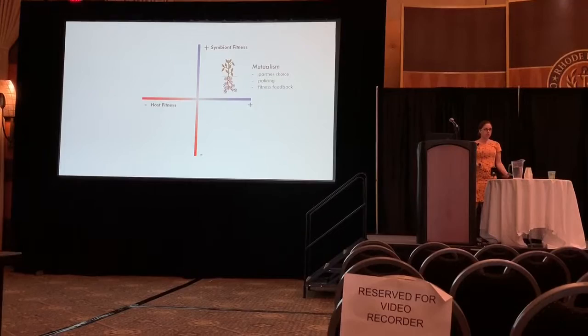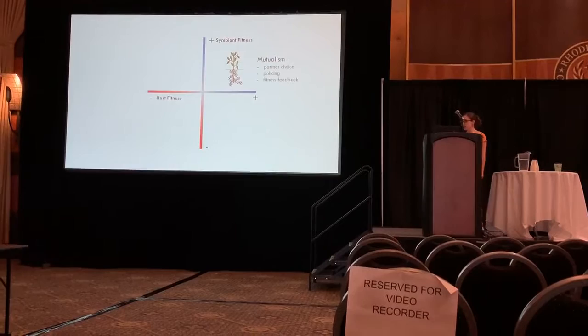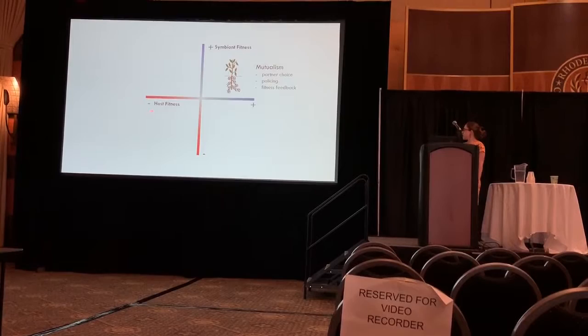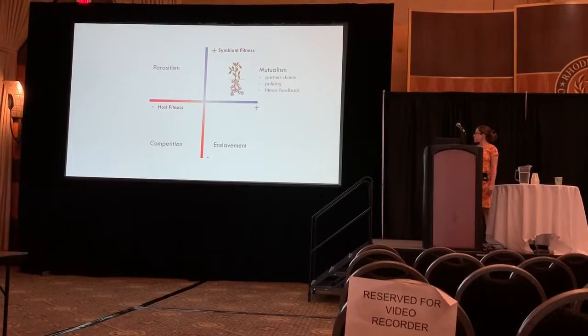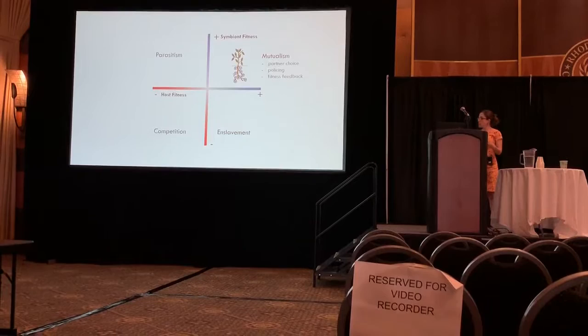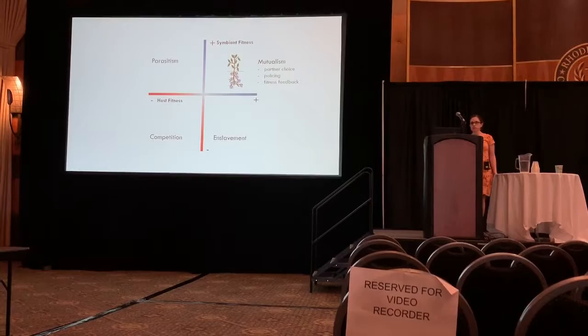If we look at symbiont fitness we could really span this whole matrix, and we don't have a lot of good ideas about evolutionary mechanisms that keep partners together in some regions of it. With pathogens we have a better idea, and with parasites we know a little bit, but we haven't even thought much about scenarios where hosts are enslaving symbionts, or where hosts and symbionts are competing for food or resources.